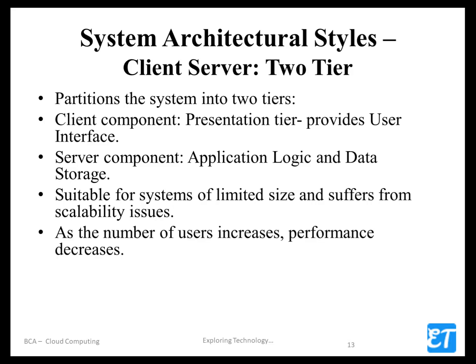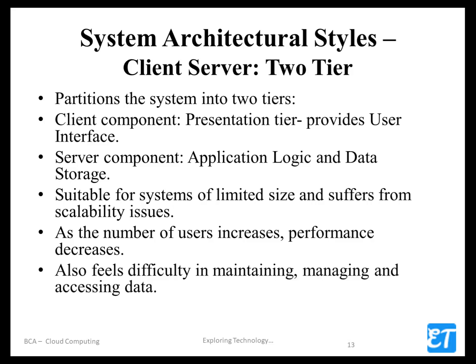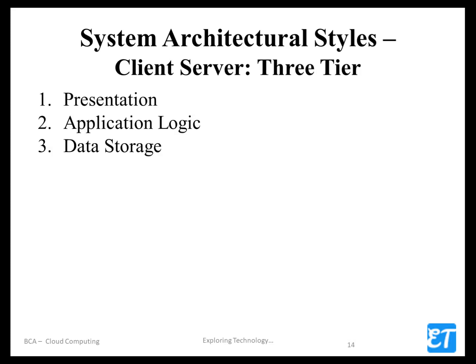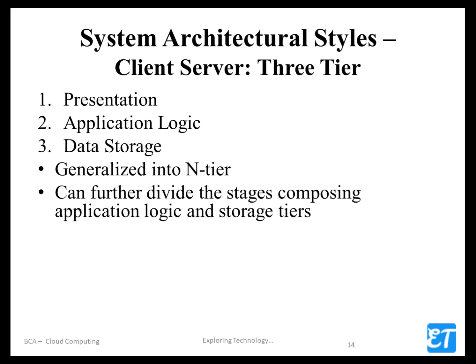The two-tier system has limitations: performance decreases, and there is difficulty in maintaining, managing, and accessing data. That is why three-tier architecture exists, with three layers: presentation, application logic, and data storage. We can also call this n-tier architecture, where we divide into multiple layers and tiers.